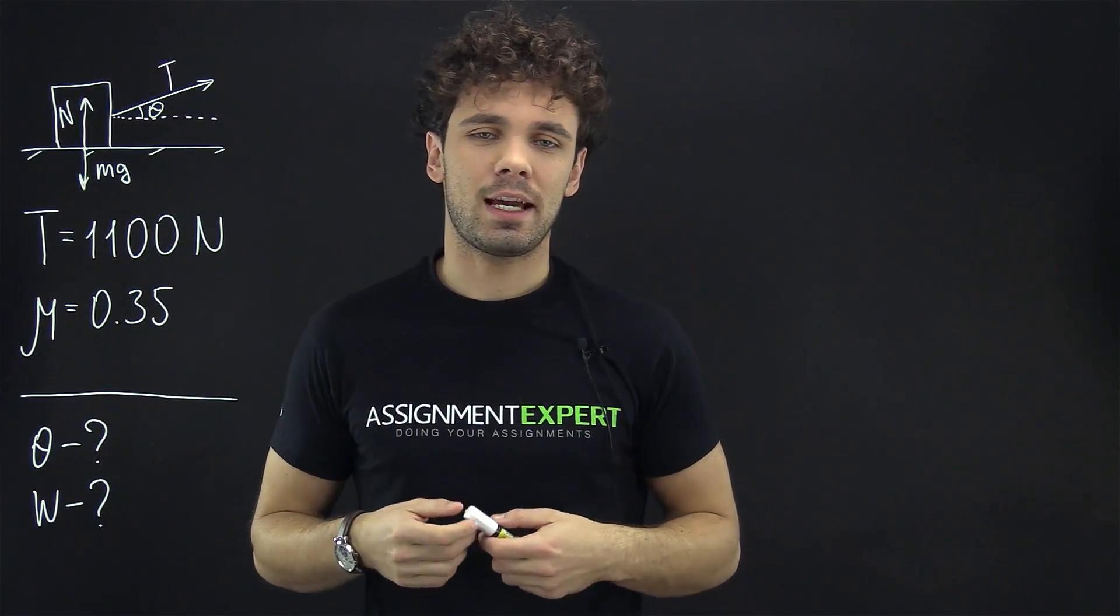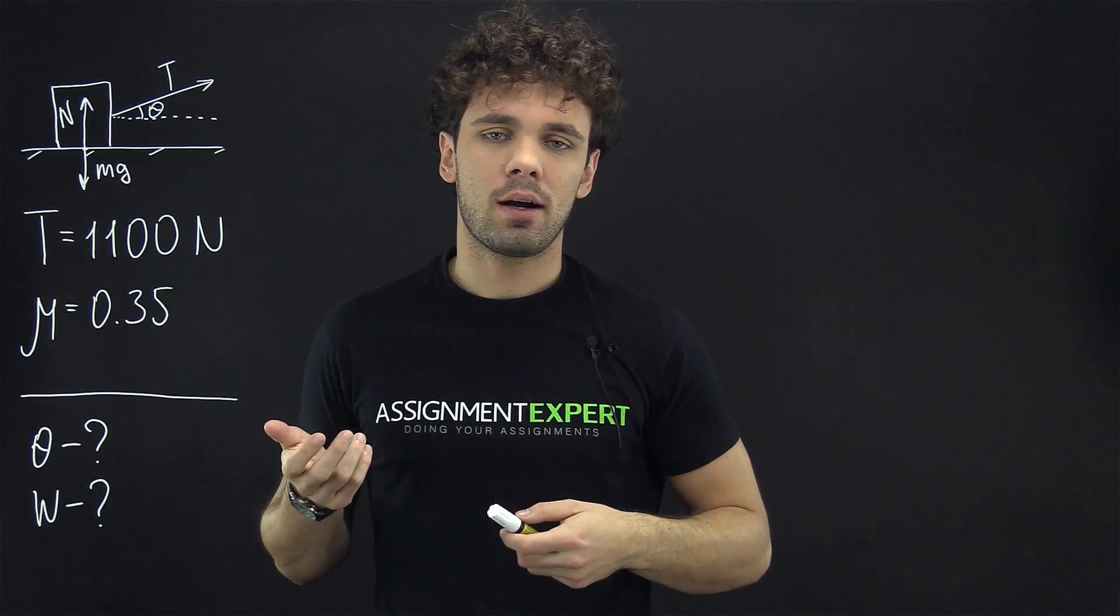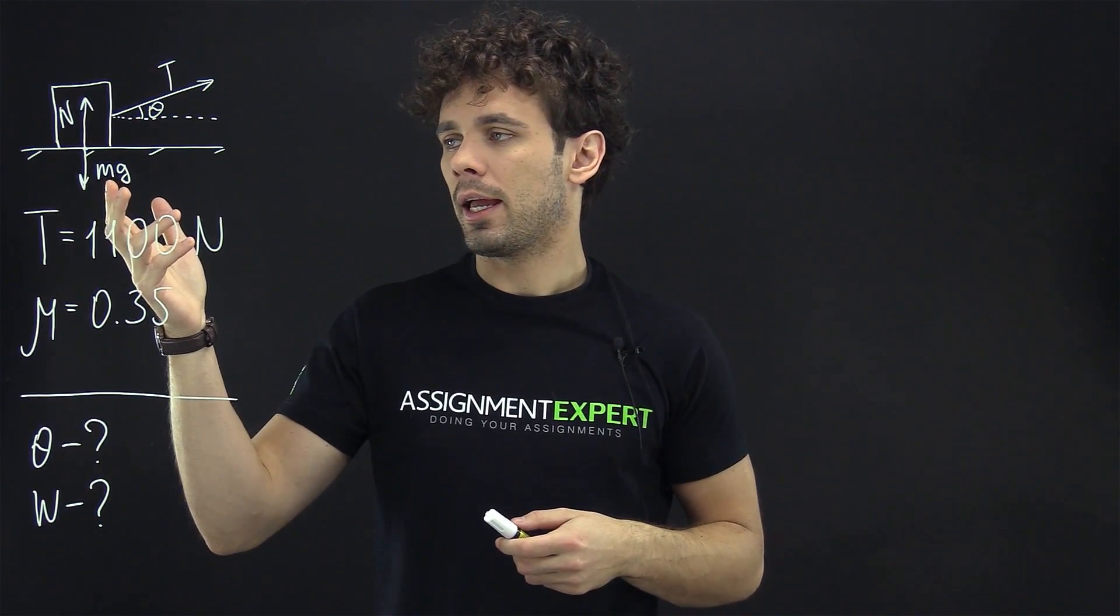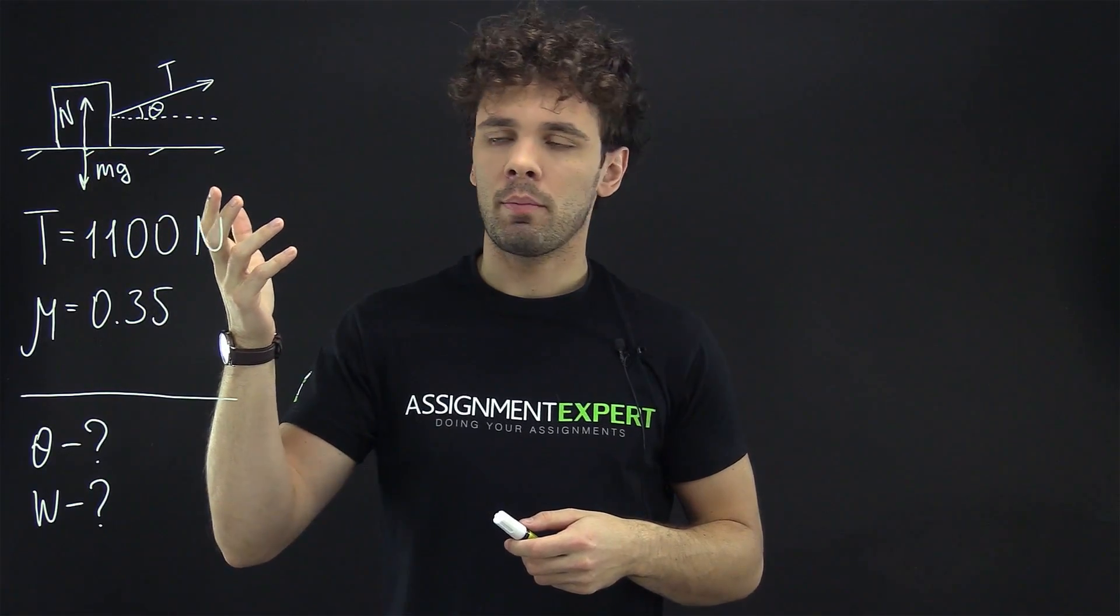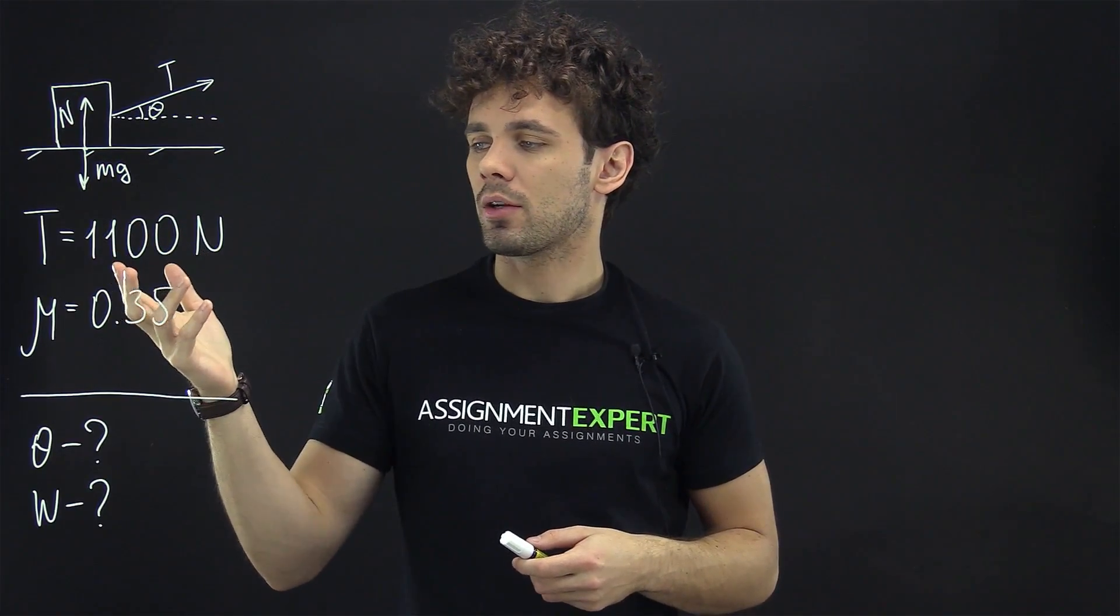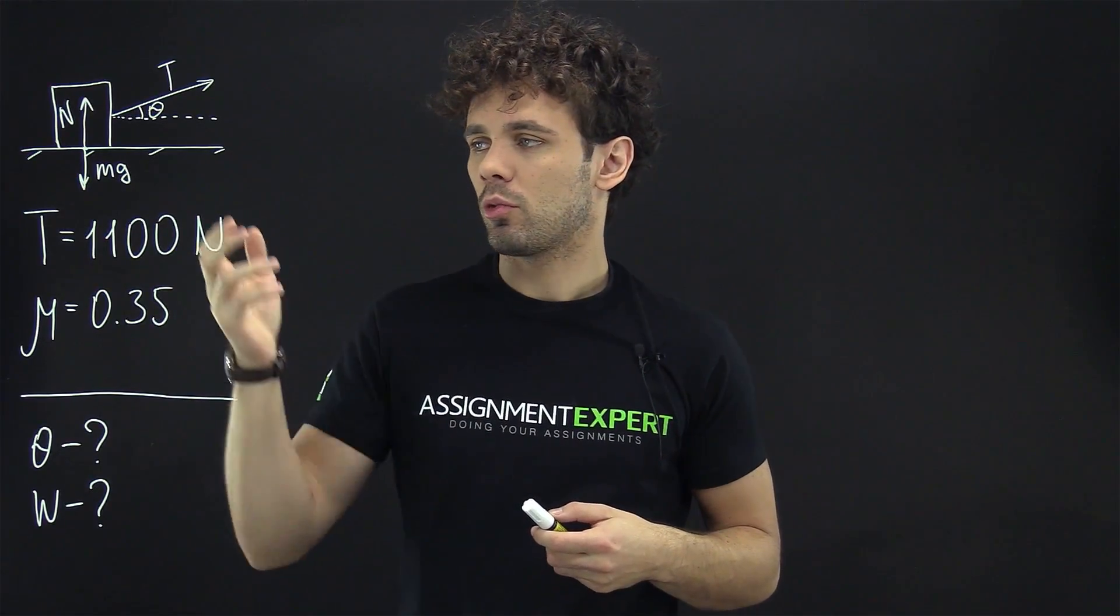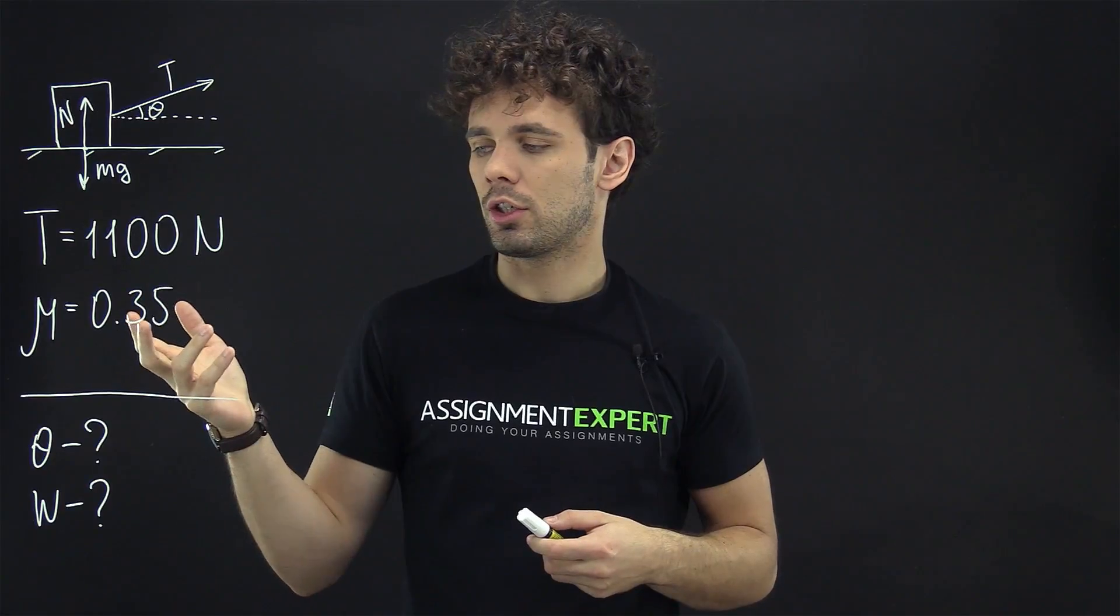Hi guys, this is Assignment Expert and in this example we have a box of sand which is initially stationary and then we move it across the floor by means of a cable which has a tension 1100 newtons. The coefficient of static friction between the box and the floor is 0.35.